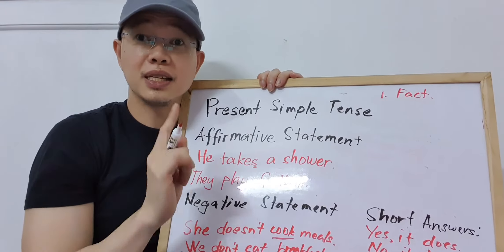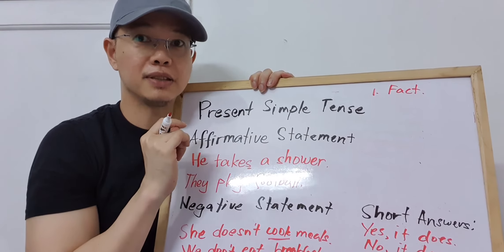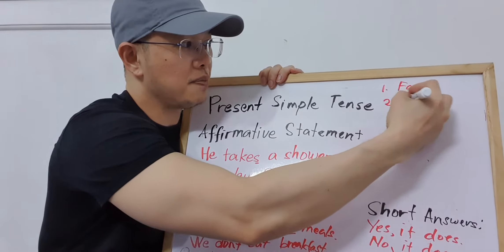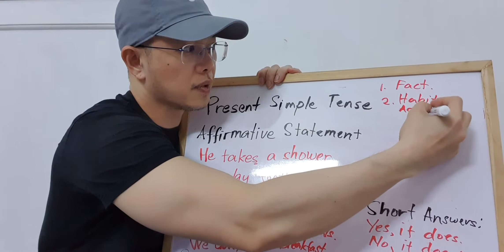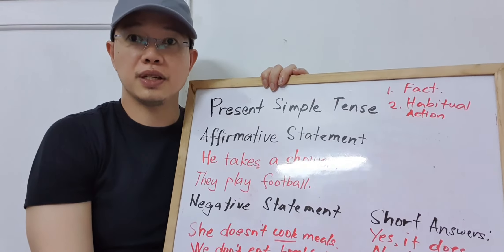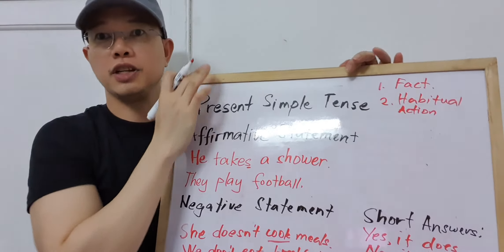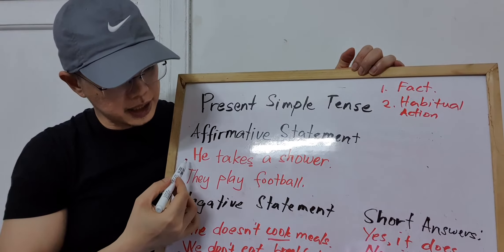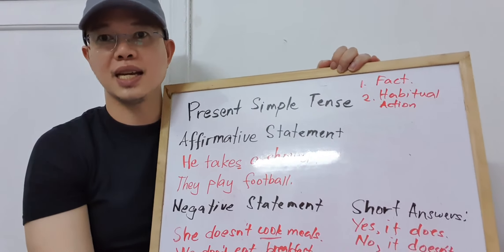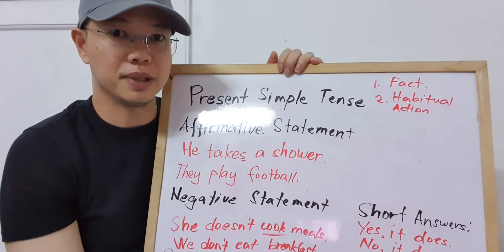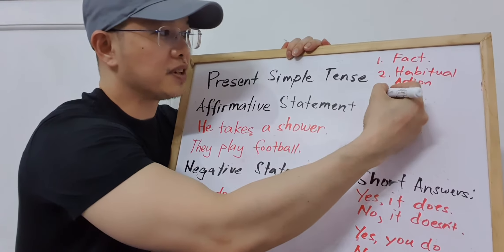First, when you are stating a fact — for example, 'The sun rises in the east.' You are expressing a fact, so you use Present Simple. Second, for habitual action — when you want to state or express something that regularly or habitually happens. For example, 'He takes a shower every day' — that's a habitual action, so we use Present Simple.